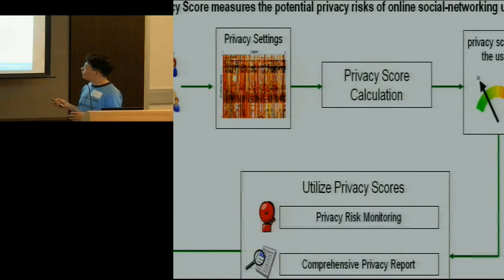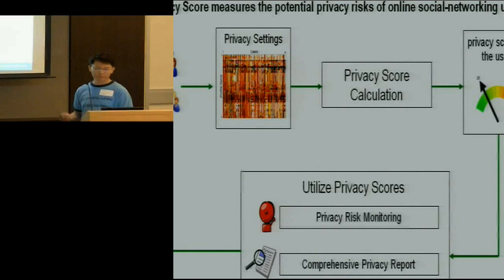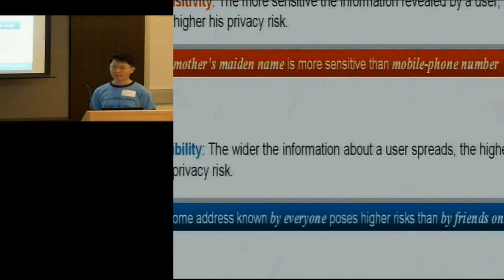Privacy settings here are simply the privacy controls — what information about me can be accessed by whom. For example, my birthday can only be viewed by my best friends, my cell phone number is only viewable by coworkers or colleagues, and my mother's maiden name should be kept confidential — no one should be able to see that. This is exactly like the visibility settings you have on Facebook.